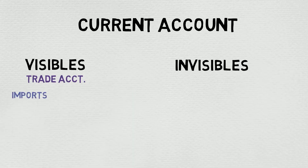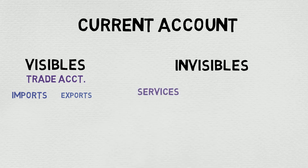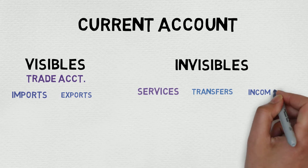Trading goods — that is, imports and exports — is visible because we can see them crossing the borders. But trade in services is invisible. Invisibles are further divided into three parts: services, transfers, and income.